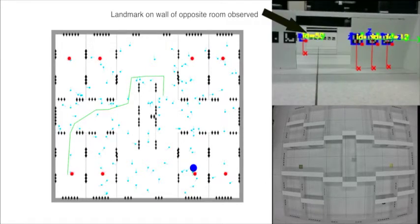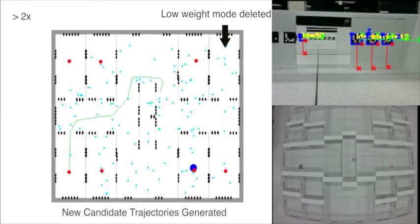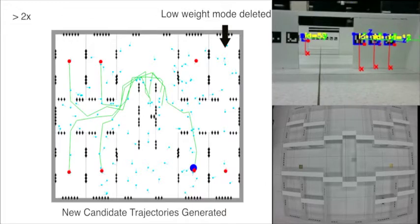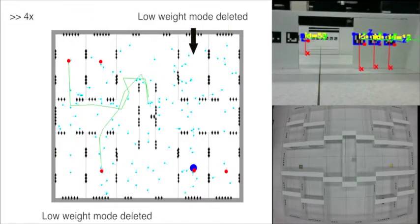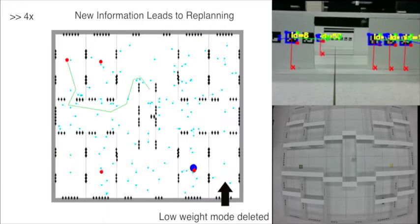As the robot turns, it observes a landmark on the wall of the opposite room. This information leads to an update that successively removes the unlikely hypotheses. When a belief mode is removed, re-planning gets triggered which leads to new candidate trajectories. In this scenario, we can see that unlikely hypotheses get successively removed.